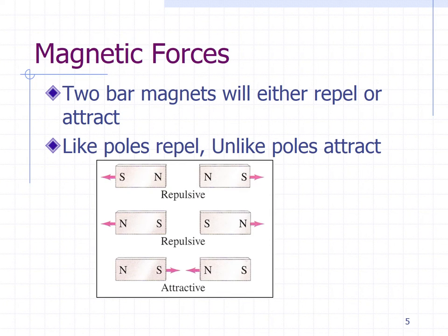So we know that bar magnets or any magnet will either repel or attract other magnets. So this figure shows north poles repelling, south poles repelling, and unlike poles attracting.